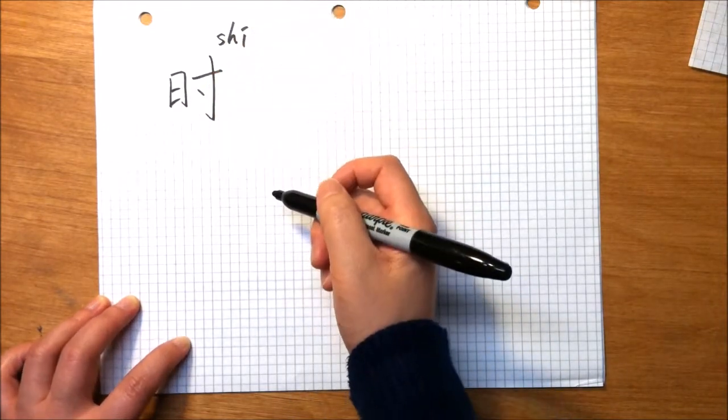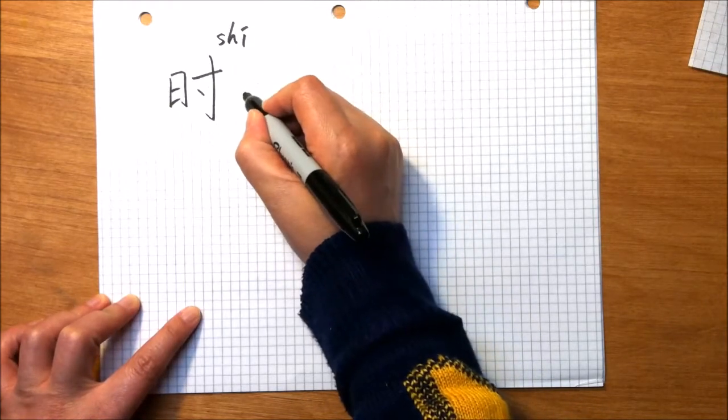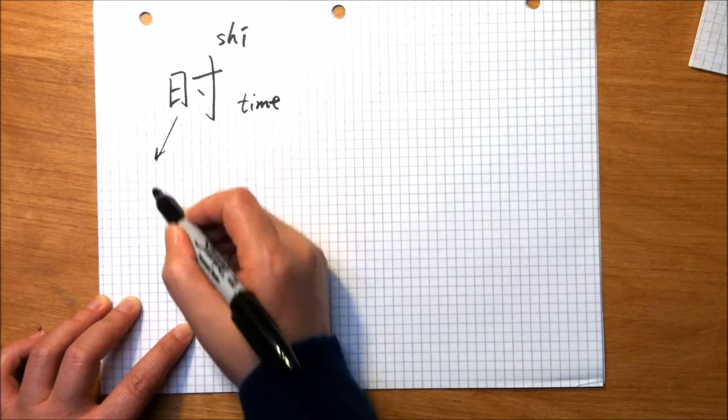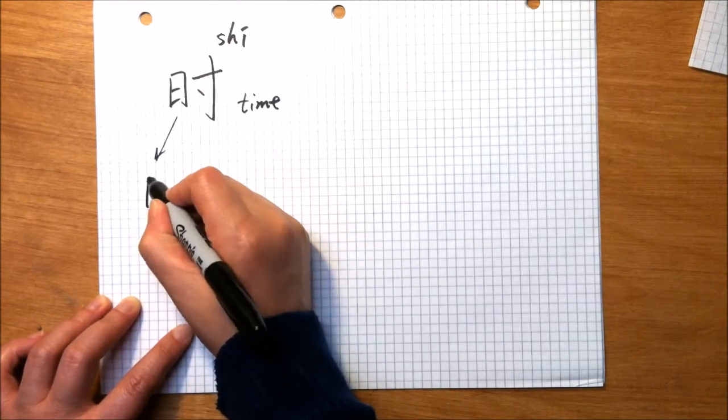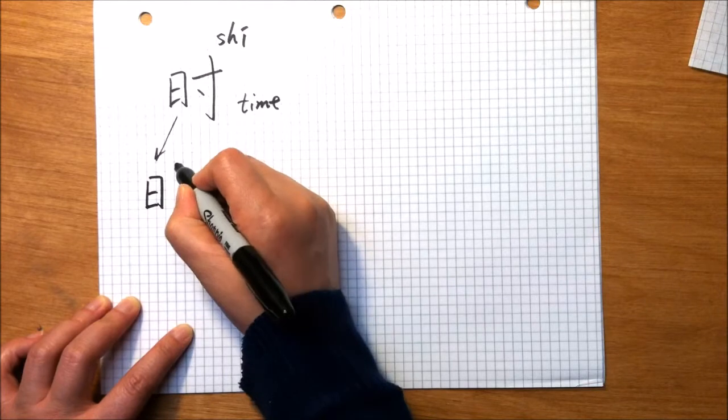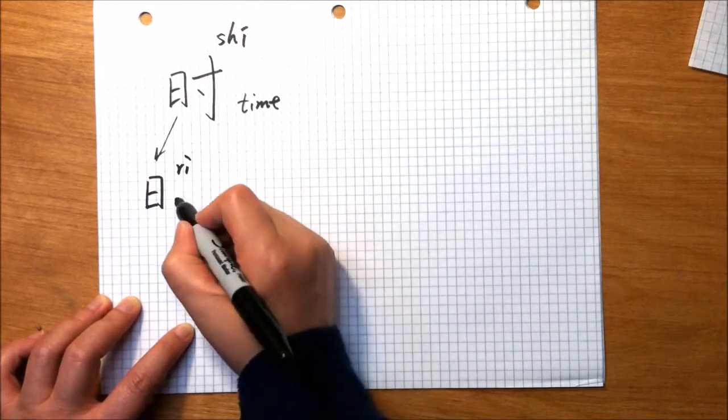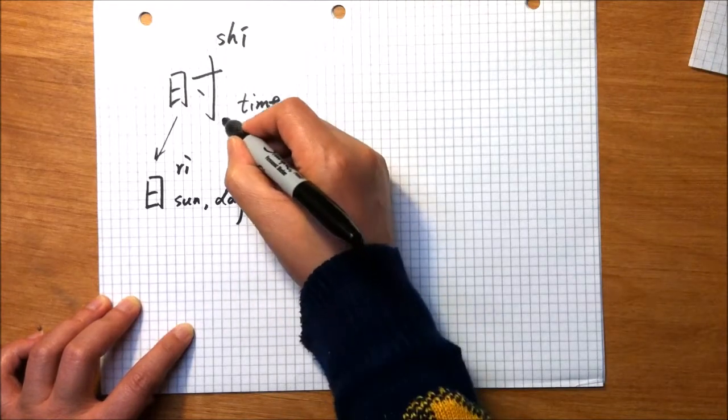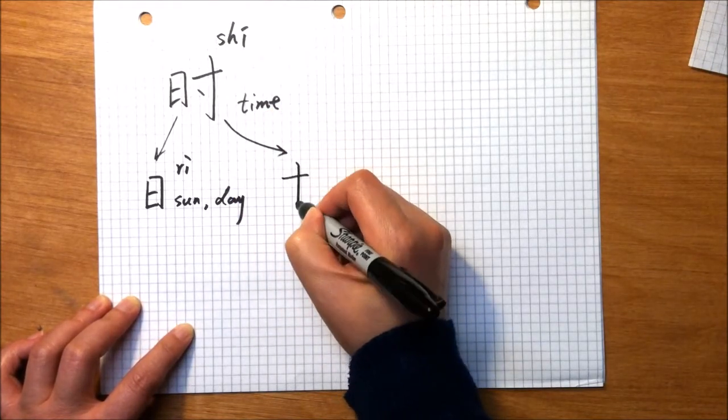The basic meaning of this character is chan. We can see the left part of this character is ri, which means sun or day, and the right part of this character, cùn.